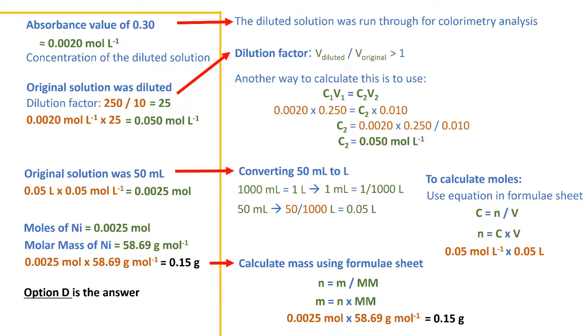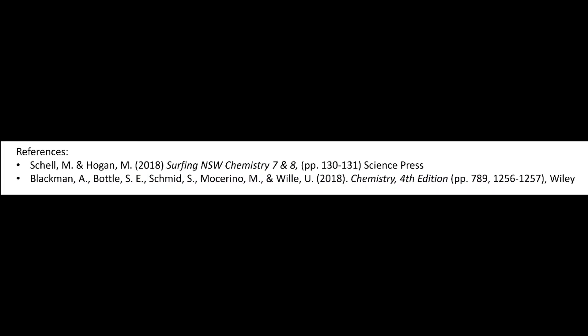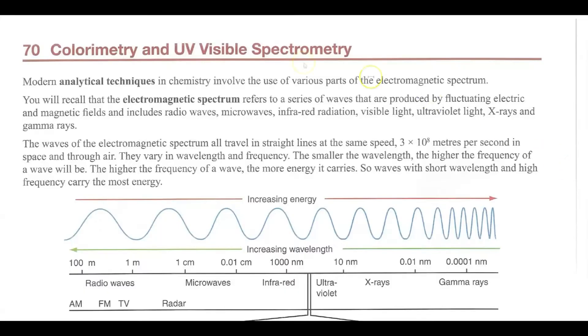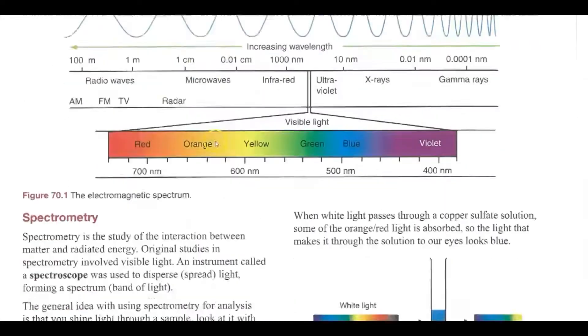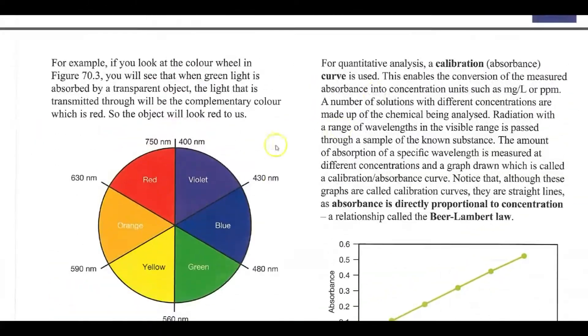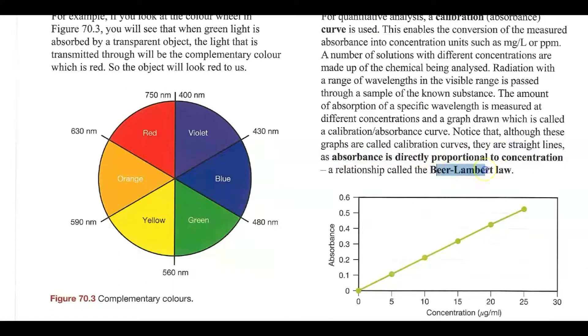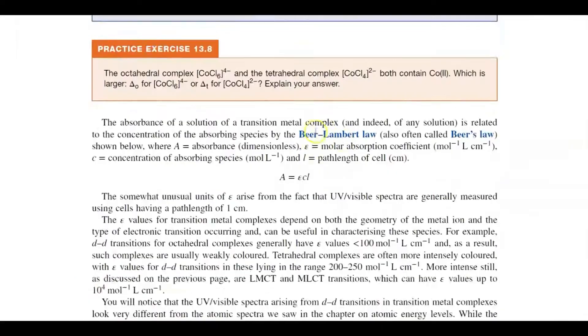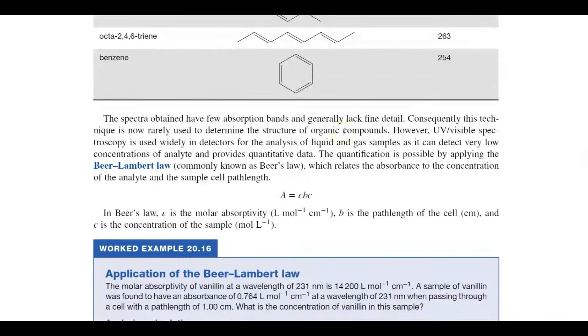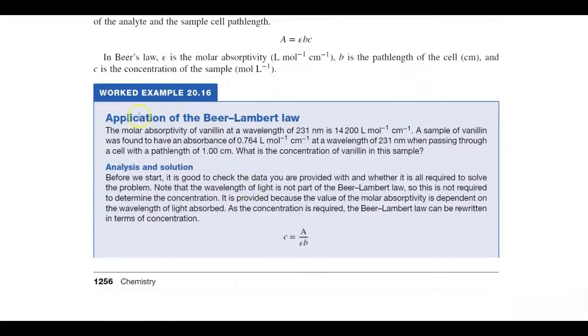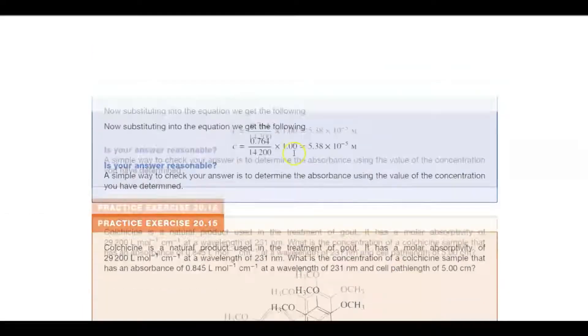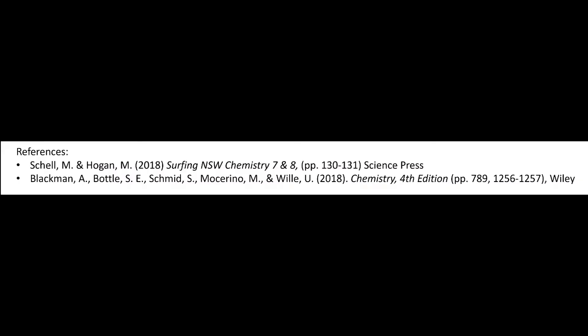And here we just bring it all back to summarize what we talked about. For this video, the following references were used. Schellen and Hogan have a section on colorimetry and go over calibration curves like we see in the question. The Beer-Lambert law is also stated, which describes the linear relationship between absorbance and concentration. In Blackman et al., we can see this law expressed in a mathematical formula, linking the absorbance and concentration via the length of the path that light travels, and an absorption coefficient value. If you have any questions or comments,